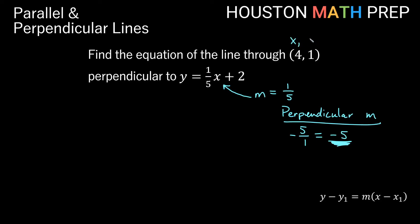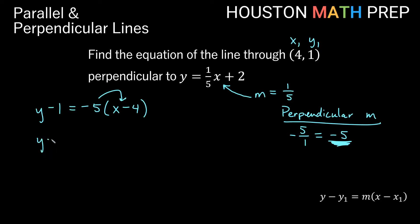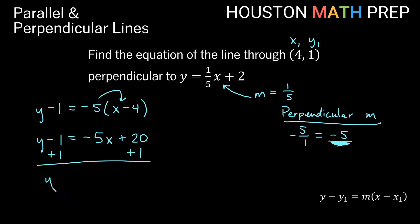We'll use x1 of 4 and y1 of 1. Using point-slope: y minus 1 equals negative five — our perpendicular slope, not the original — times the quantity x minus 4. Distributing: y minus 1 equals negative five x, and negative times negative is positive, so five times four is 20. Adding 1 to both sides, we get y equals negative five x plus 21. The slope is negative five and the y-intercept is positive 21.